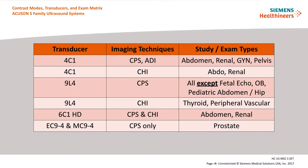This matrix describes which transducers are contrast-enabled along with the associated imaging techniques and exam types. CPS is available on all contrast-enabled transducers, whereas CHI is more selective in the exams it is available on. For example, if a contrast exam is being performed on a superficial region of interest, the user must choose a transducer, exam preset, and imaging technique that best fits the parameters of the exam. If a 9L4 transducer and CHI imaging technique are required, the available exam types are thyroid and peripheral vascular. CHI will not be available with the 9L4 transducer if a different preset is used. This exam matrix is available in the system user manual.